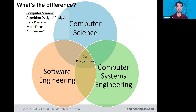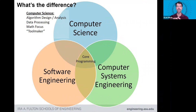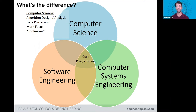From there it specializes. Computer Science is focused on algorithm design and analysis — data processing, with more of a math focus. I see it as the tool maker. The computer scientist is similar to the physicist in the physical sciences — looking at basic principles of computing, developing tools and concepts that other engineering and applied science people can use to solve greater problems. It's about solving meta-problems or discovering new things in computer science — where artificial intelligence and algorithm design live.